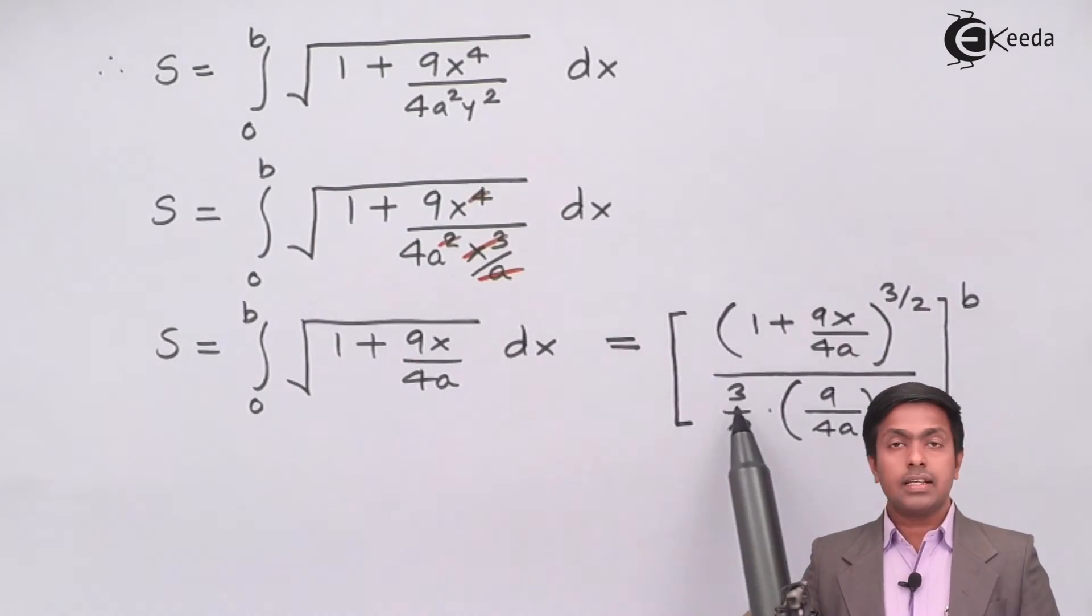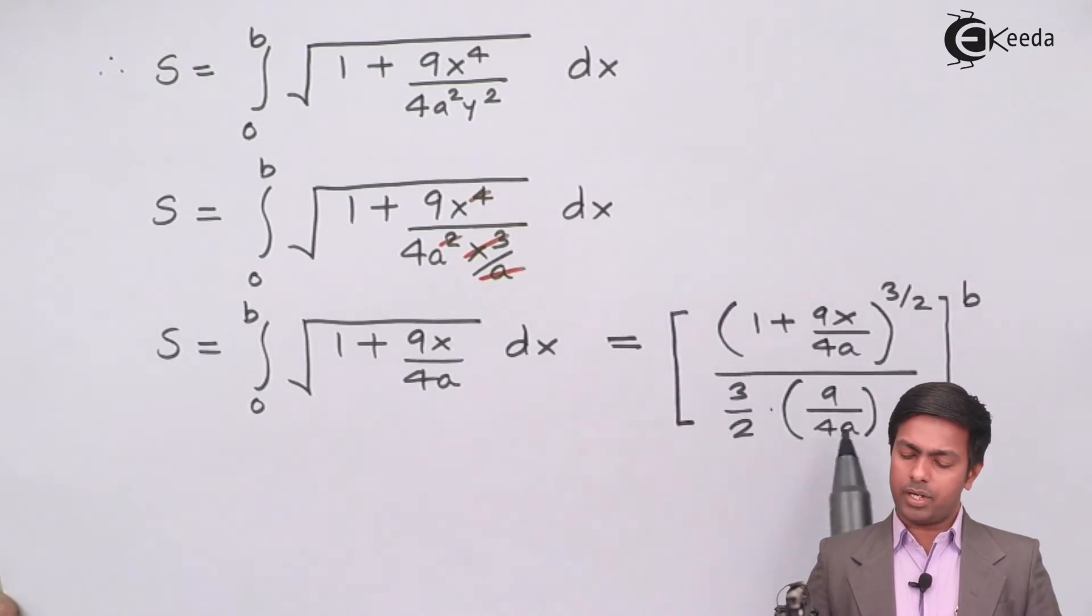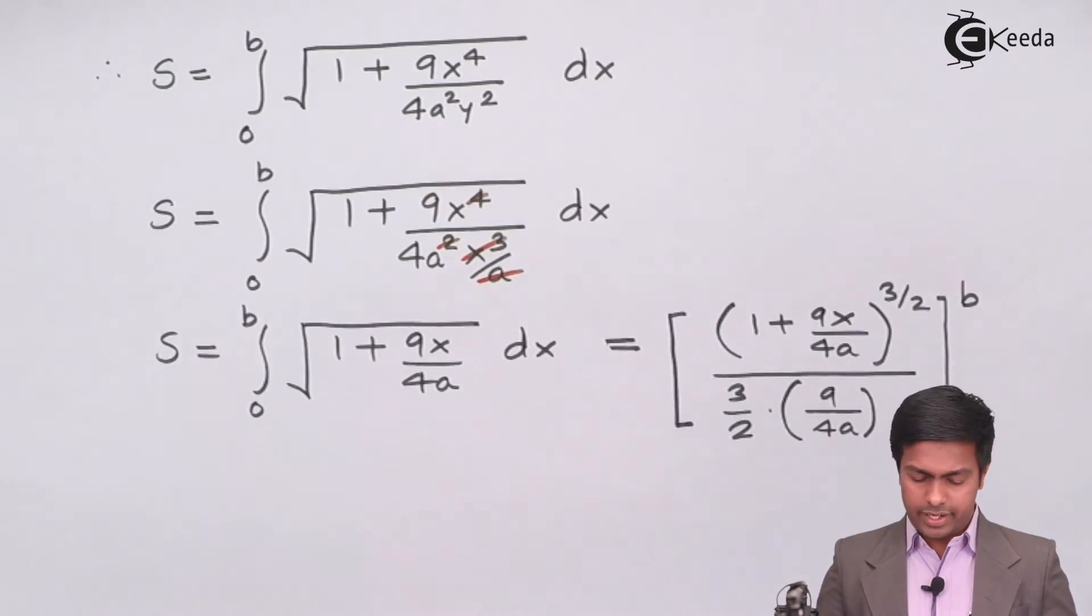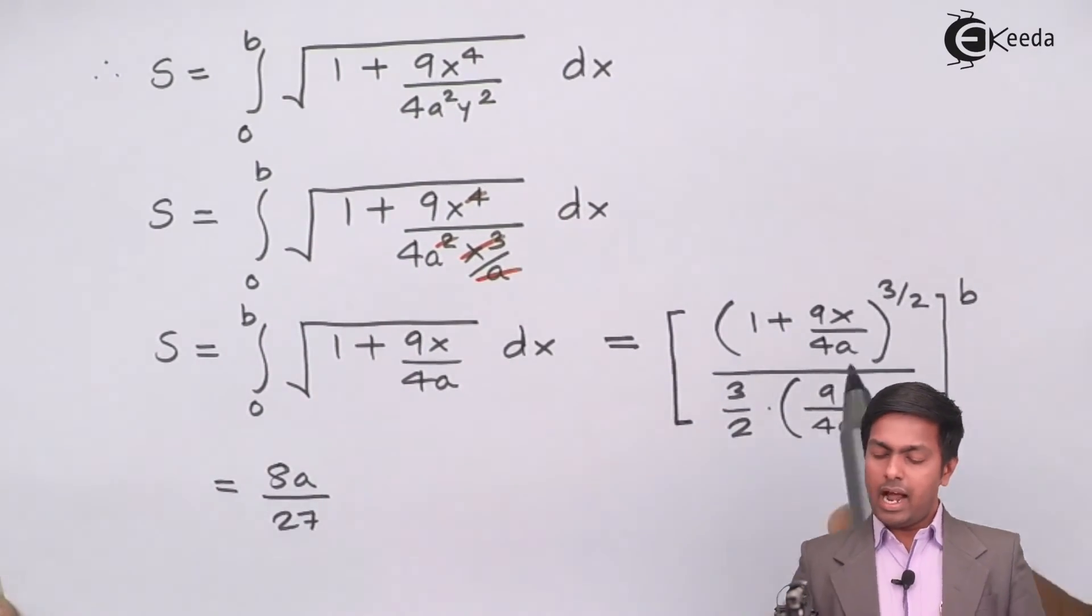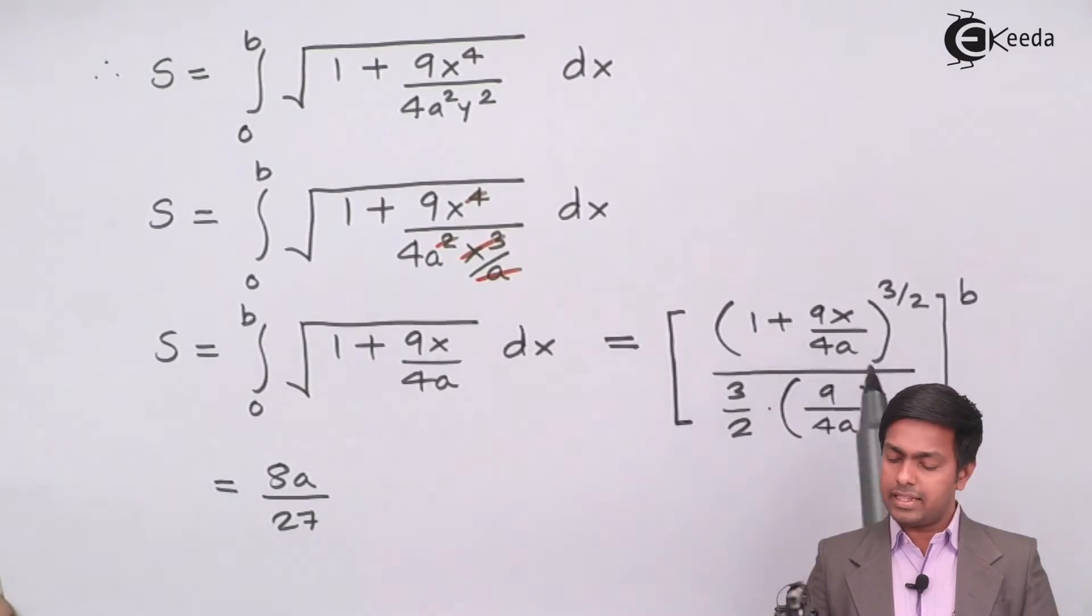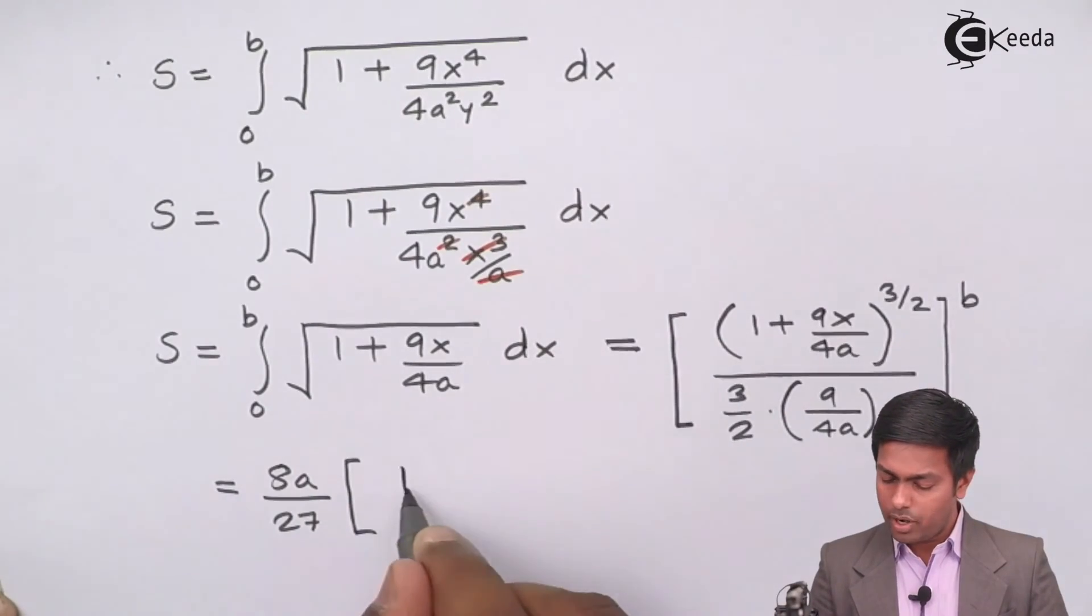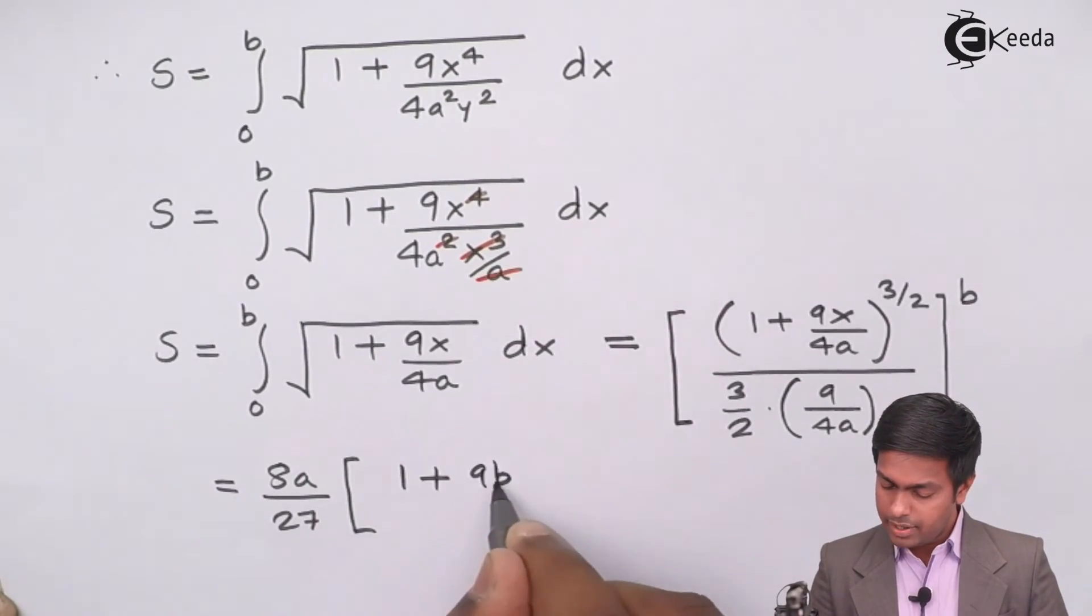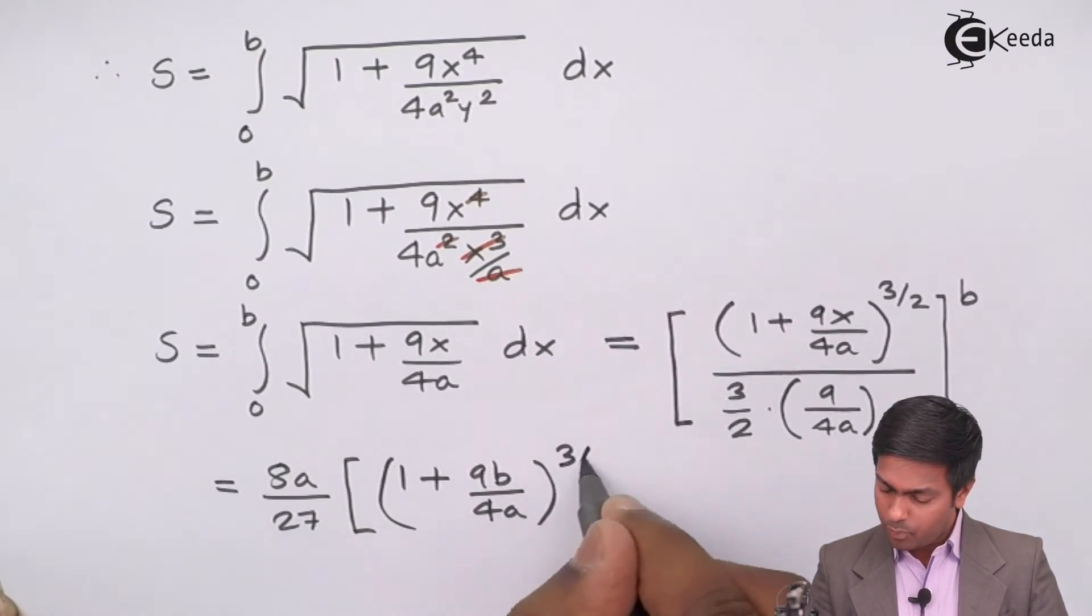Now this 9, 3s which is 27 upon 8 a, it will come out, that will become 8a upon 27. I will take it outside. So here 8 a upon 27 outside. And for this function I will put x as b and then x as 0. So if I put x as b so here we will get 1 plus 9 b upon 4 a to the power 3 upon 2.